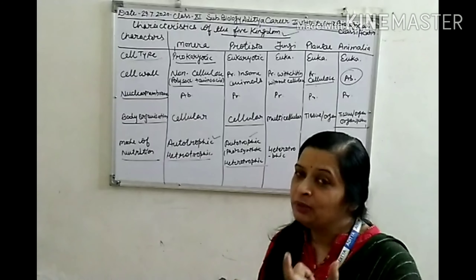Next is mode of nutrition. In Monera, autotrophic means they synthesize their own food, and heterotrophic means they obtain food from other sources. In Protista, autotrophic organisms synthesize their food with the help of sunlight through the process called photosynthesis. Heterotrophic organisms do not synthesize their food — they obtain it from different animals or plants.